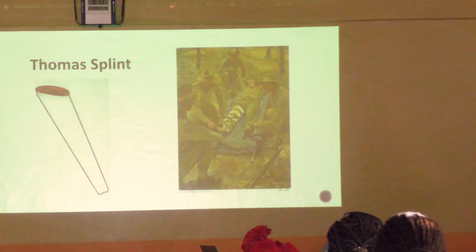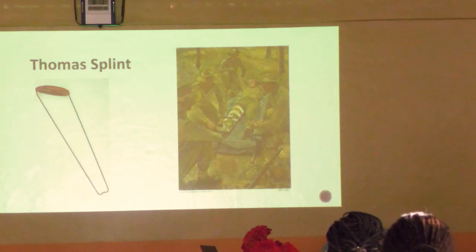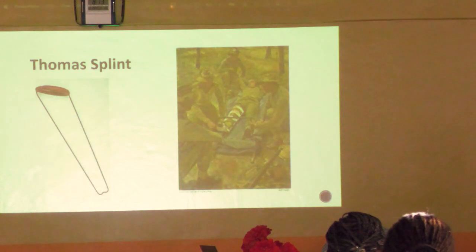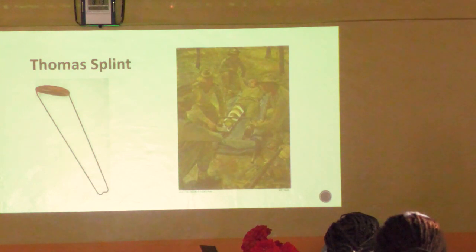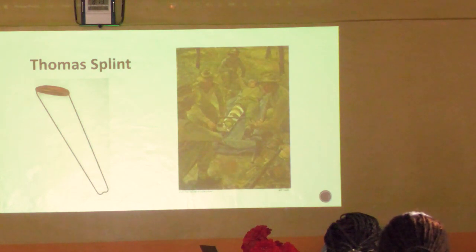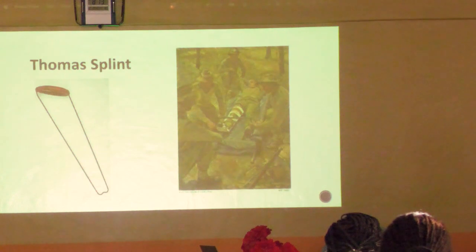One of the earliest medical interventions in trauma was the Thomas Splint, named after Hugh Owen Thomas, an English orthopaedic surgeon. During the First World War he realised that if you splinted a compound femoral fracture - of which there were thousands - you saved the patient's life.